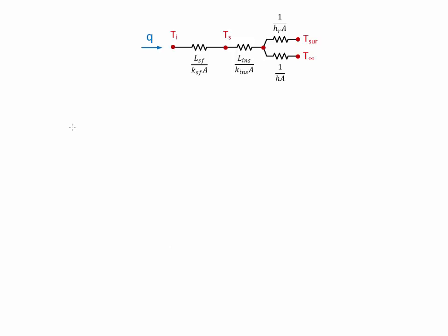We have Ti and we're looking for Ts. So we write q equals Ksf A divided by Lsf times the difference Ti minus Ts.